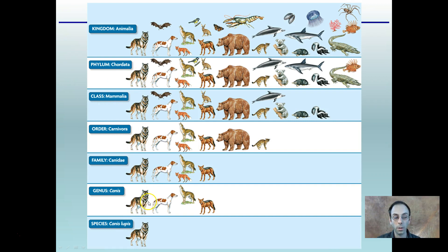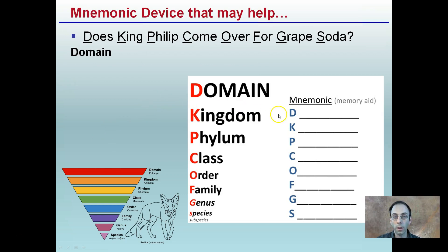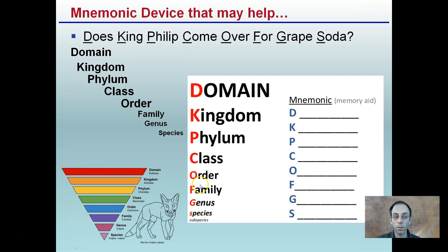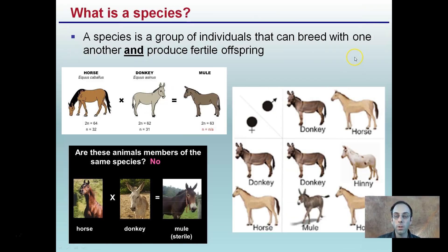It's important to know the order of taxonomic levels. A mnemonic device can help: Domain, Kingdom, Phylum, Class, Order, Family, Genus, Species — and you can also have subspecies. One example mnemonic is 'Does King Philip Come Over For Grape Soda?' The funnel shape gets smaller as you go down, indicating it's getting more and more specific.